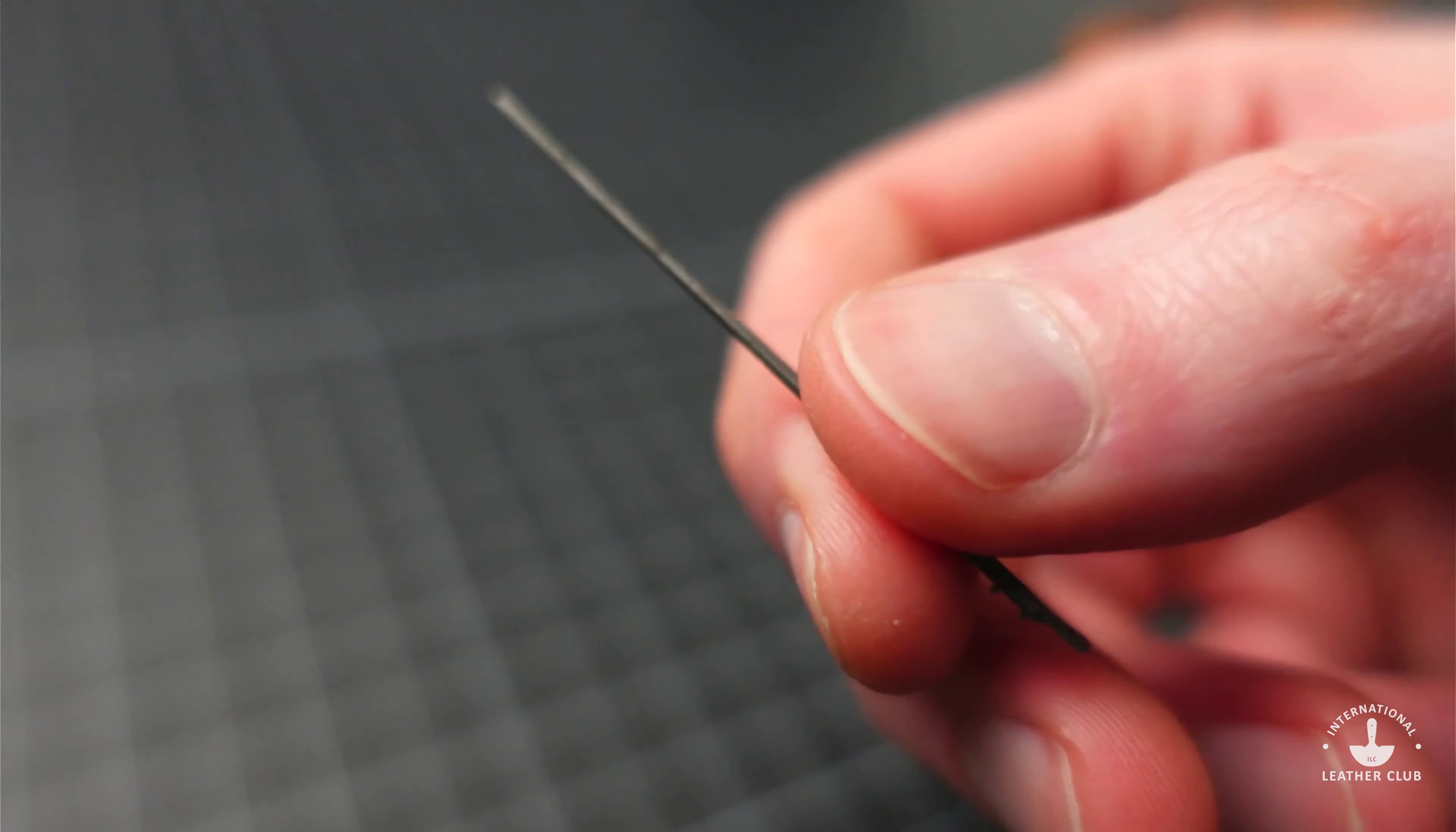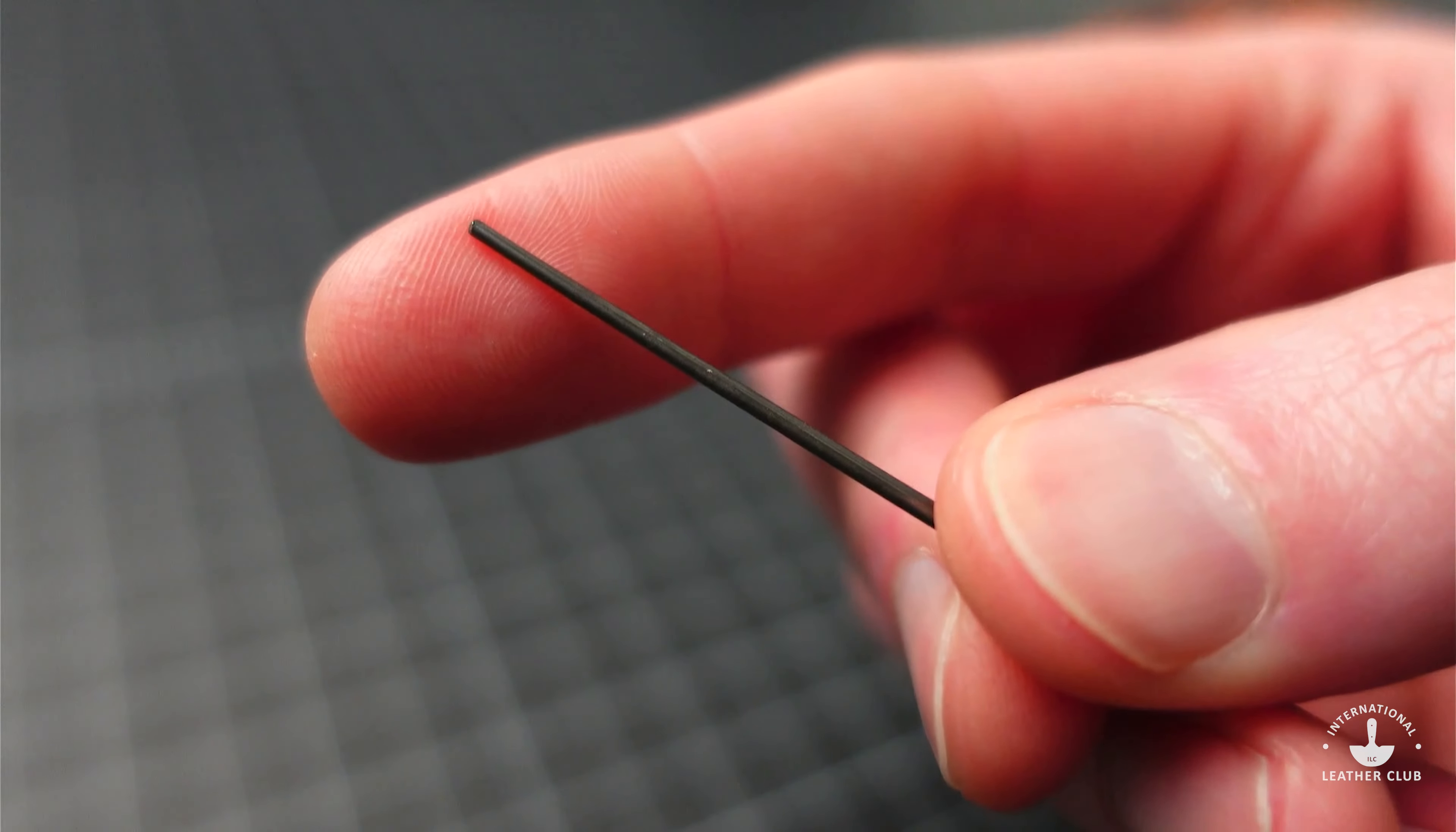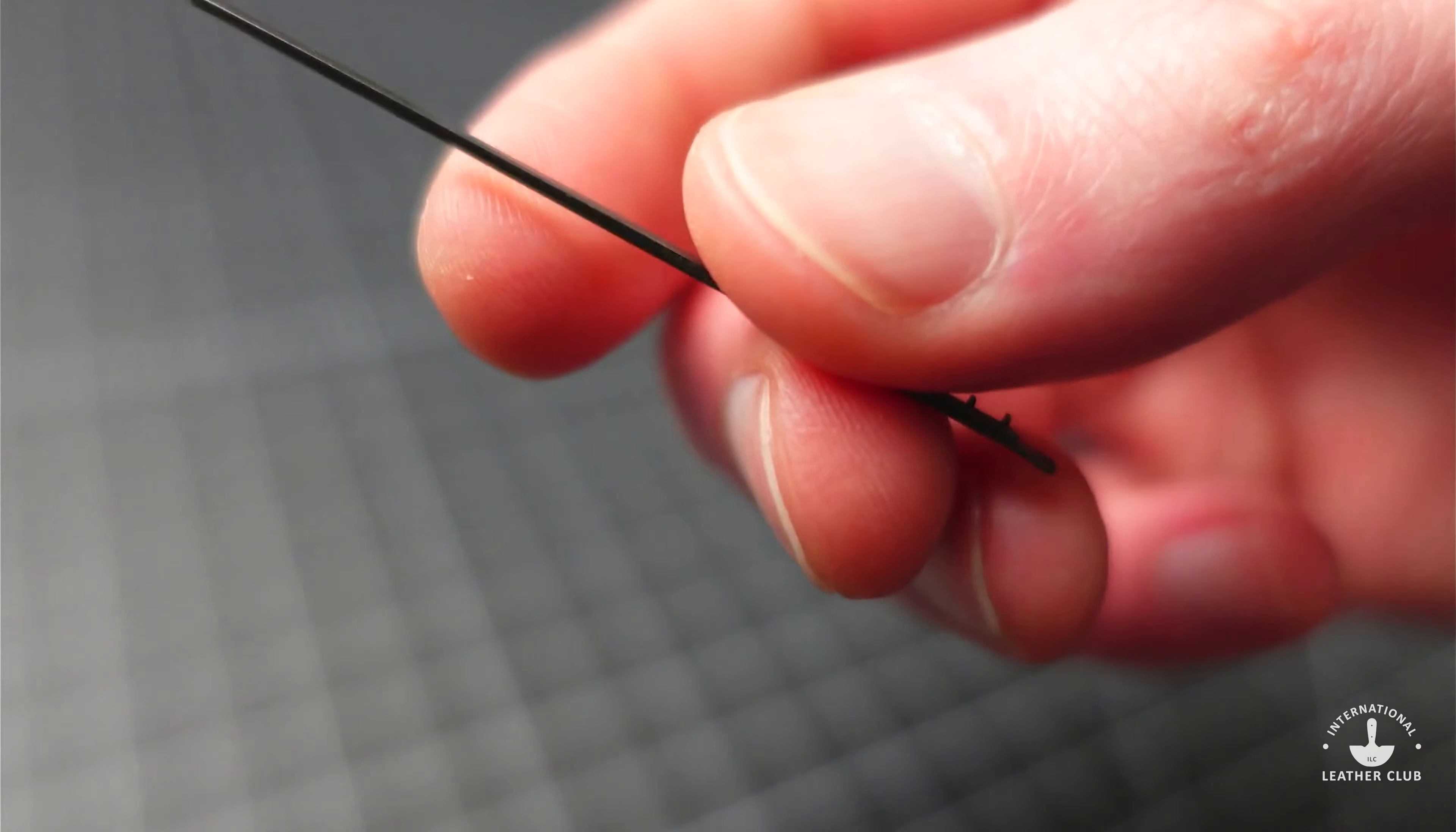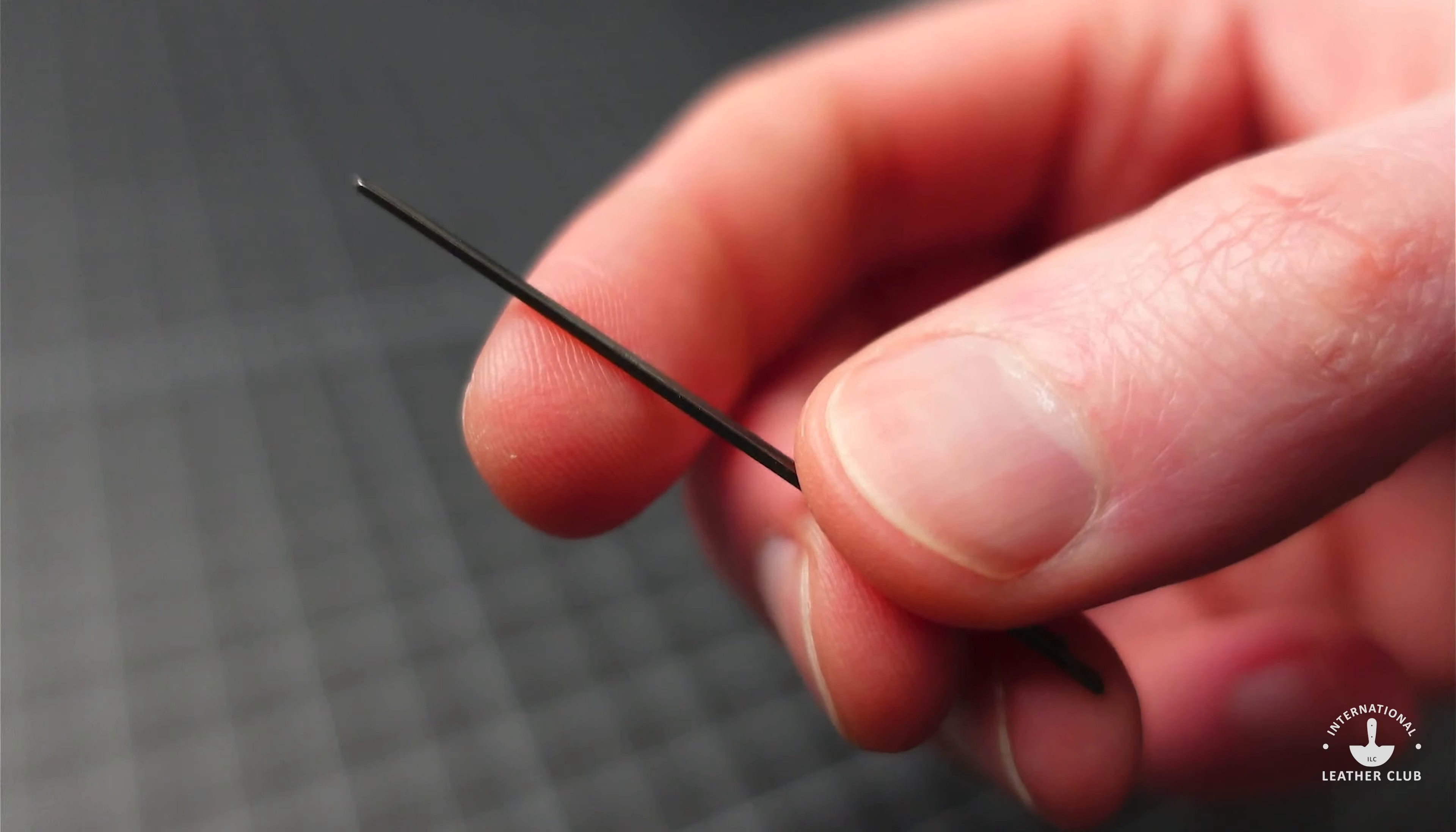The primary function is to help feed lace through the existing holes to help stitch that leather. They're often used for decorative work on belt edges, purses, holsters, and any number of items which may appear more rugged in nature.